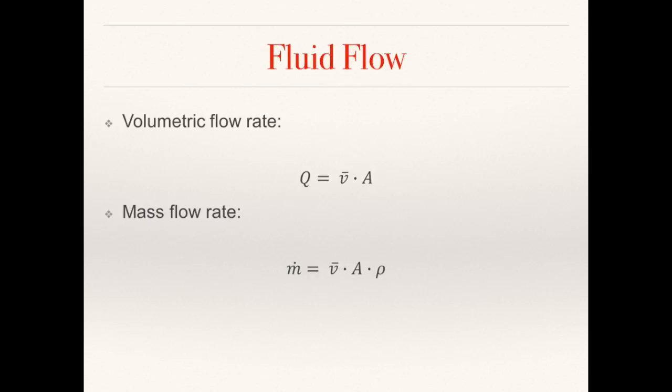Since the mass of an object is its volume multiplied by its density, the mass flow rate is just the volumetric flow rate multiplied by the specific fluid density.